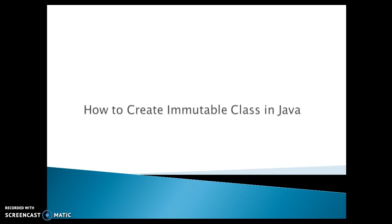So let's try to understand what is an immutable class in Java. An immutable class, as the name suggests, is a class whose object can't be modified in any way once created. Once an object of an immutable class is created and initialized, the content of any field of that object can't be changed and remains the same throughout the life of the object. If there are methods that modify the content in some way, then a new object is created with the modified content and returned. The original object does not change.